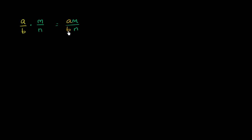a is an integer, m is an integer, so you have an integer in the numerator. And b is an integer and n is an integer, so you have an integer in the denominator. So now the product is the ratio of two integers right over here — so the product is also rational. If you give me the product of any two rational numbers, you're going to end up with a rational number.